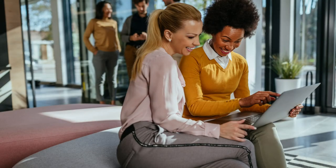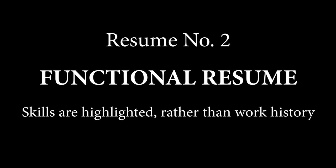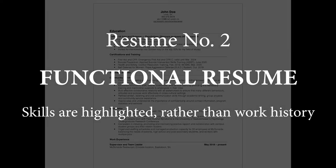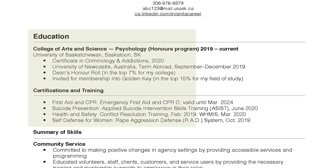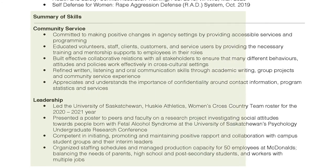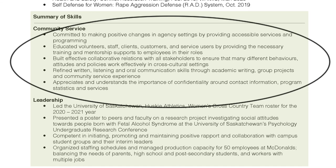A functional resume is suitable when you are lacking formal work experience for a specific job but have transferable skills to perform the duties — for example, if you are an engineer applying to a customer service role in a retail store. Start with an education and certification category including anything relevant to the role. Then create a summary of skills section that highlights the key skills an employer is looking for in the job posting. This section usually includes two to four subsections of skills chosen based on the job posting.